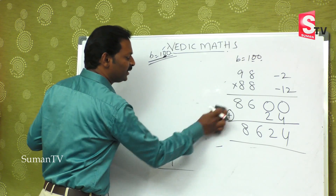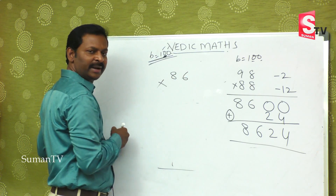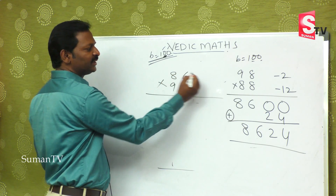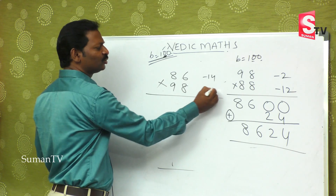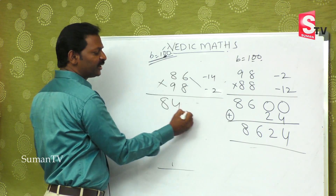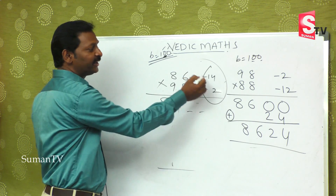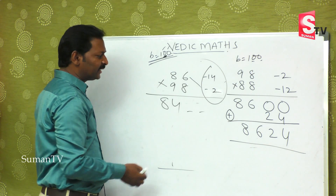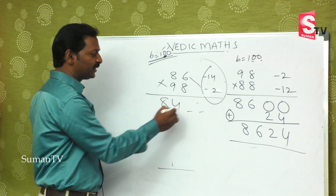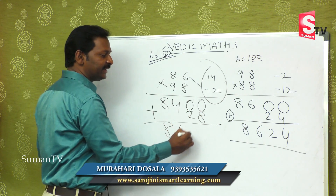Any number we can do. The biggest example: 86 multiplied by 98. 100 minus 86 is 14, and 100 minus 98 is 2. So 86 minus 2 is 84 — that is the first part. There are two places. 14 multiplied by 2 is 28 — minus into minus is plus. You can say 0 plus 28, or directly 28. So the answer is 8428.